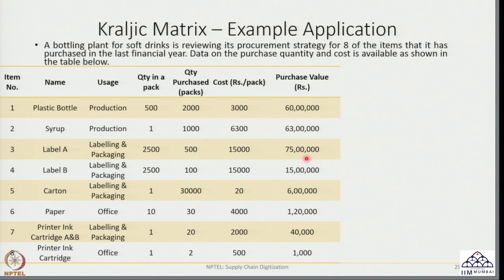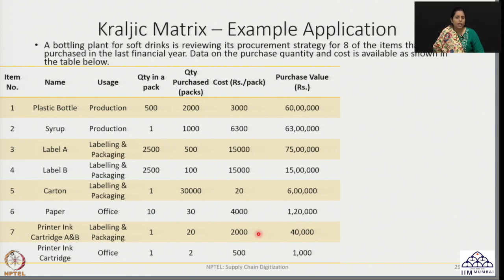In standard ABC analysis, Label A would be an A item, with plastic bottle and syrup as B items, and the remaining as C items. However, this does not help much in defining procurement strategy. ABC analysis can help identify inventory policies, material handling costs for high-value items, and review policies for inventory control, but beyond these internal processes, it does not tell us much about procurement strategy. We need to gather more information on the supply side.